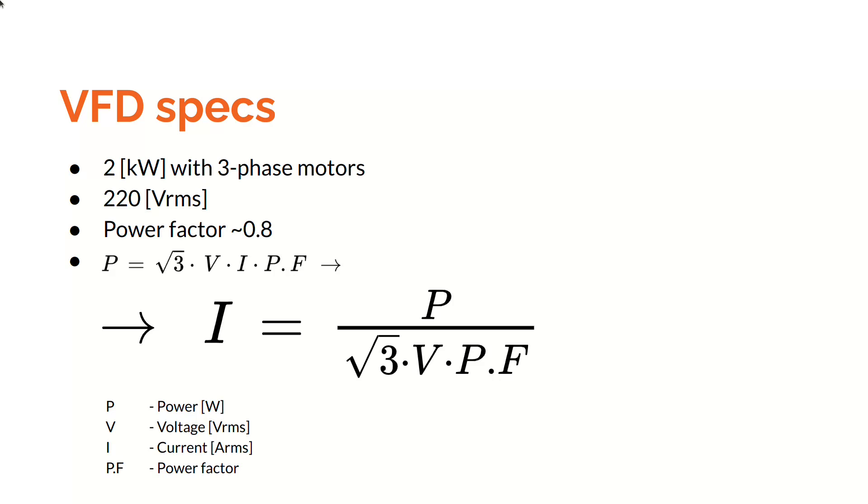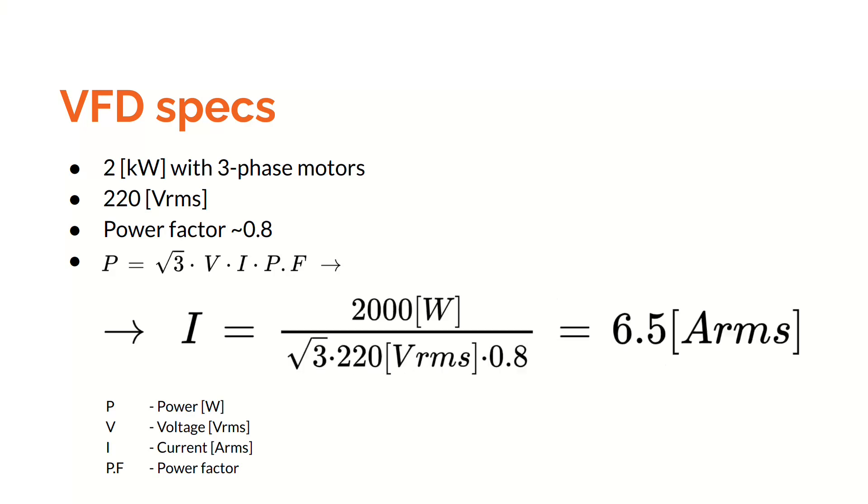This VFD was designed for up to 2kW when running 3-phase motors. In my country, I have 220 AC voltage, and the typical power factor of a motor this size is around 0.8. With all these parameters known, I now need to calculate the current my power module will need to be able to handle. So, with a 220 RMS voltage, and assuming a power factor of 0.8, my continuous current should be around 6.5 A RMS.